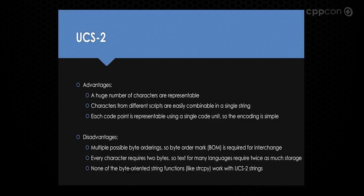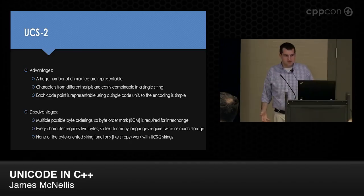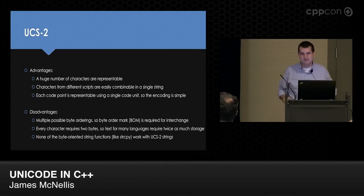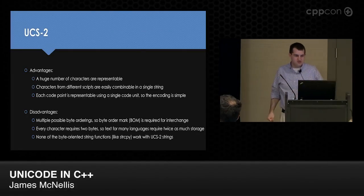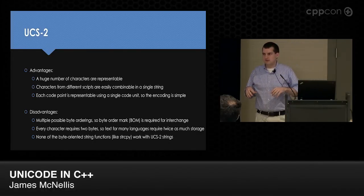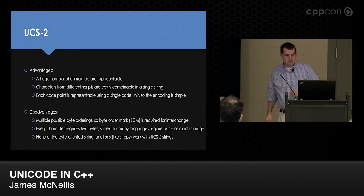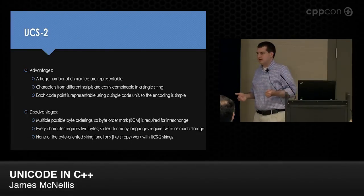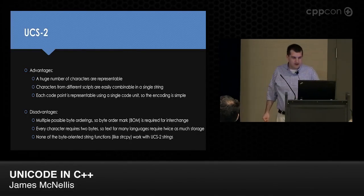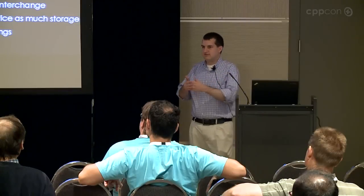UCS-2 has advantages: a huge number of representable characters (65,000+), characters from different scripts can be combined in a single string, and each code point is a single code unit so encoding is simple and efficient — to get to the 12th character, add 12 to your pointer. But there are disadvantages: multiple possible byte orderings require a byte order mark for interchange; if you receive text in one byte order and need the other, you have to transform all 16-bit elements; every character requires two bytes so text now requires twice as much storage; and none of the byte-oriented string functions like strcpy work because there may be zero bytes anywhere in the string.